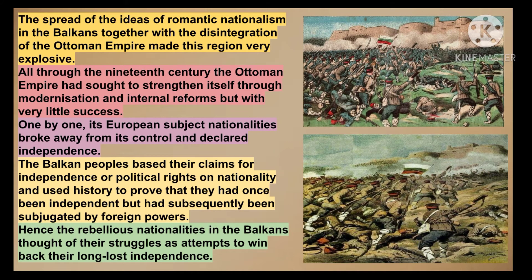With the passage of time, the spread of Romanticism occurred in this particular region — that is, the Balkan region. Romanticism means when you use poems, music, and painting to inculcate the feeling of nationalism in the minds of the people. So the spread of the ideas of Romanticism in the Balkans, together with the disintegration of the Ottoman Empire, made this region very explosive. People's idea of nationalism spread through Romanticism.